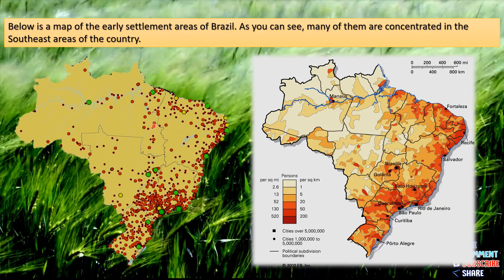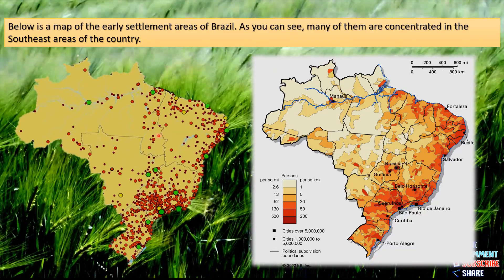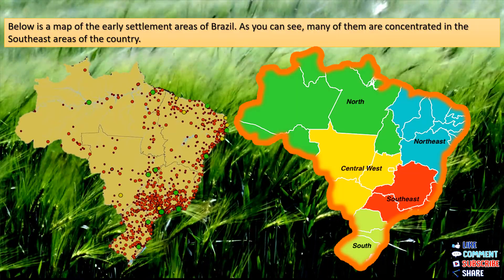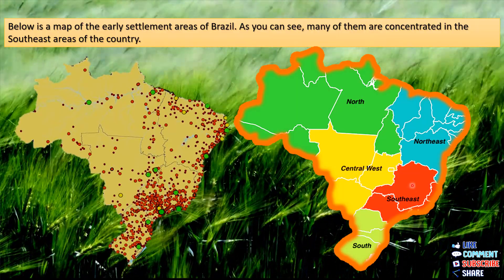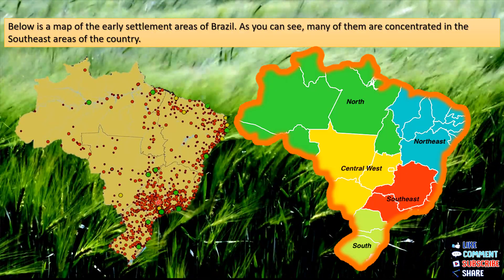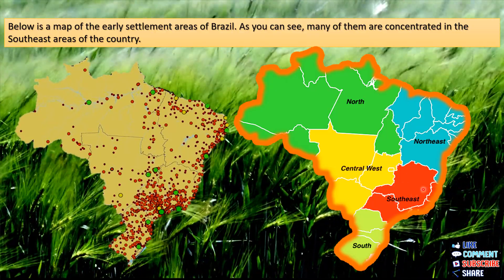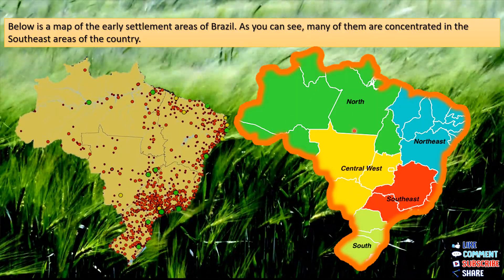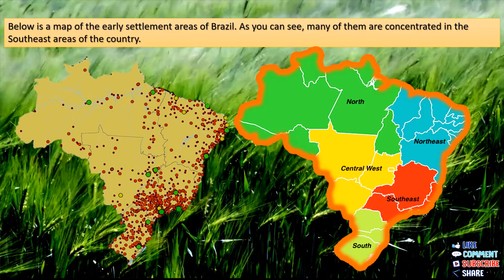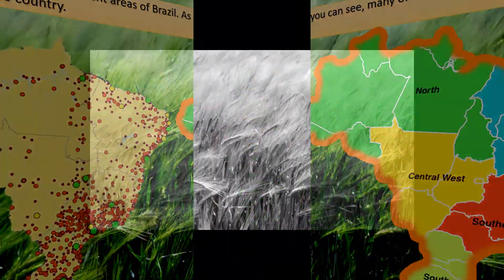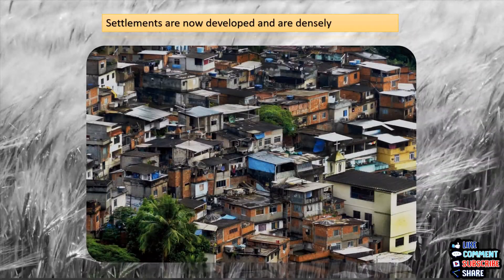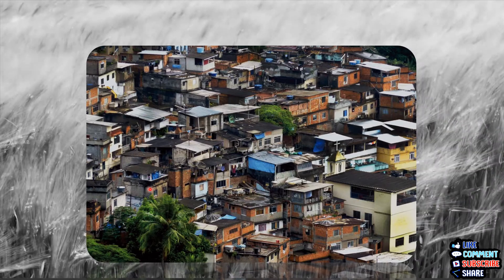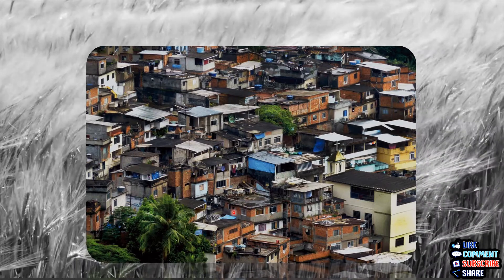The other places show scarce or sparse population. Comparing both maps, we see most of the population in the southeast and the coastal part of Brazil, whereas the central and northern part of Brazil have very less population. Settlements are developed and densely populated in the coastal areas of Brazil, and in this particular figure we see a nucleated type of settlement.